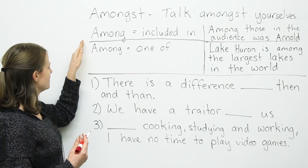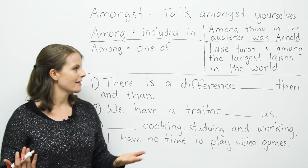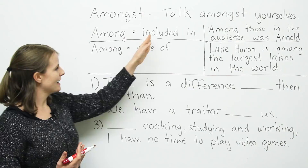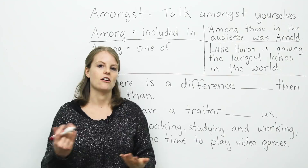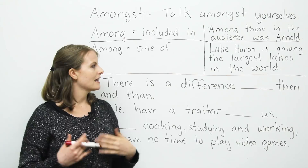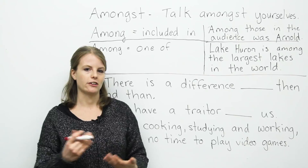Among also has two additional meanings. First, among can mean 'included in.' For example: 'Among those in the audience was Arnold Schwarzenegger' — meaning included in the audience, there was Arnold Schwarzenegger. Second, among can mean 'one of.' For example: 'Lake Huron is among the largest freshwater lakes in the world' — meaning it's one of the largest freshwater lakes, not the largest, but one of the largest.